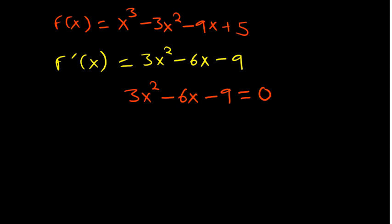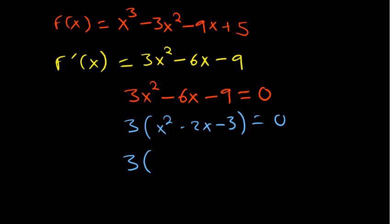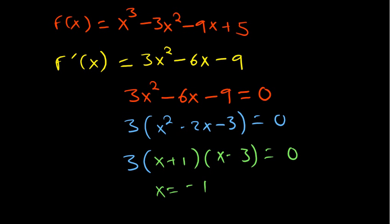To find the critical points, equate the derivative to zero. We can see this is a quadratic function. Factor out 3 to get x² - 2x - 3 = 0. Factorizing gives (x + 1)(x - 3) = 0, so x = -1 and x = 3. You can solve this by factorization, the quadratic formula, or completing the square.